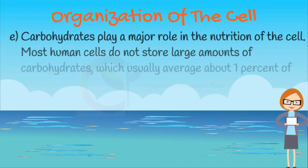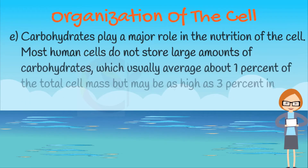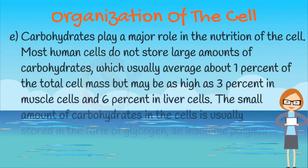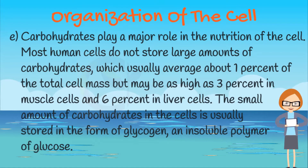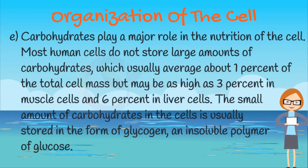Carbohydrates play a major role in the nutrition of the cell. Most human cells do not store large amounts of carbohydrates, which usually average about 1% of the total cell mass, but may be as high as 3% in muscle cells and 6% in liver cells. The small amount of carbohydrates in the cells is usually stored in the form of glycogen, an insoluble polymer of glucose.